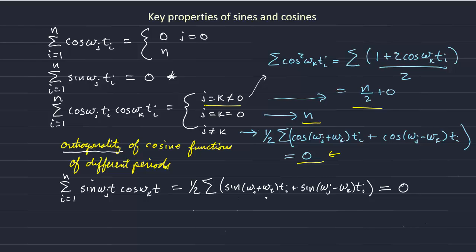This is true whether j and k are equal to each other or not, or whether j and k are equal to 0. In other words, sine and cosine functions are always orthogonal functions. This describes the orthogonality of sine and cosine functions.